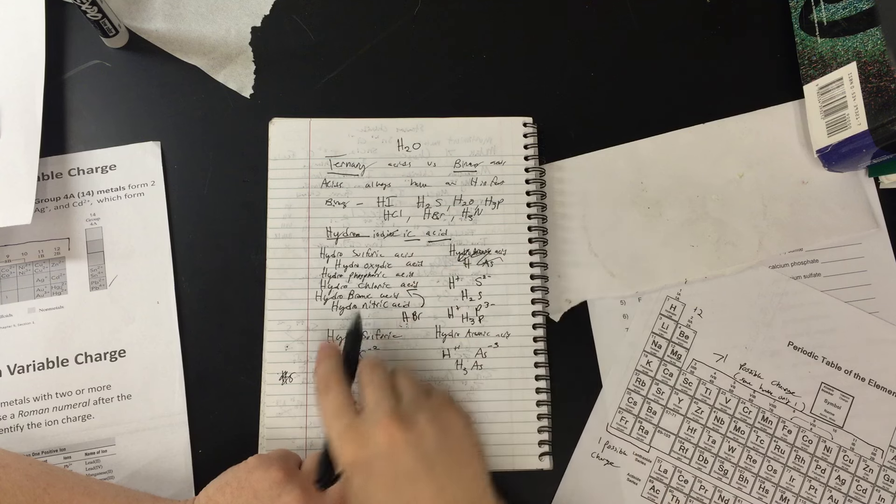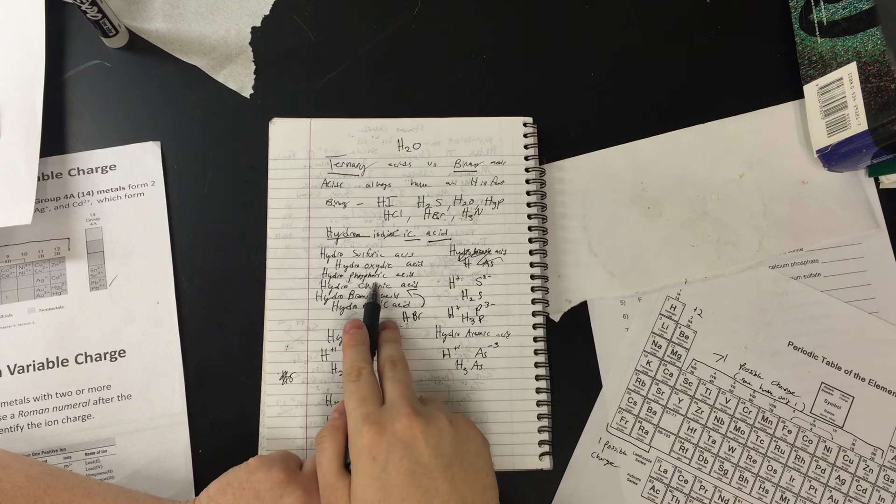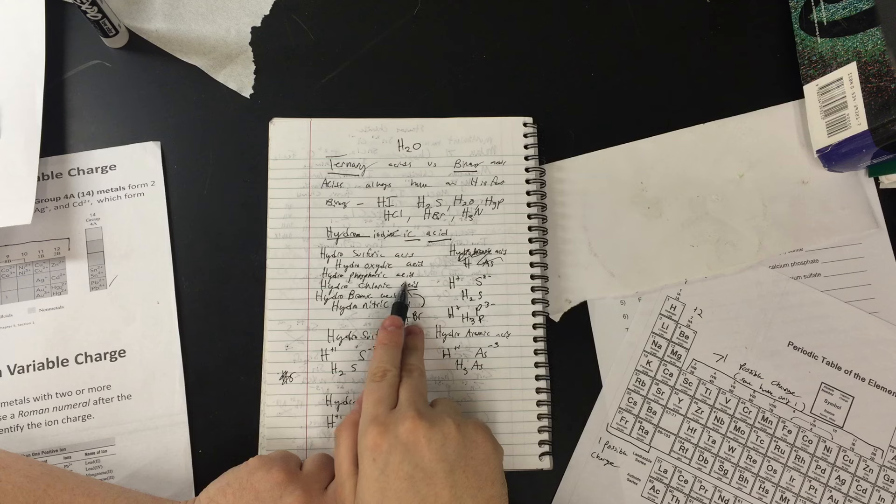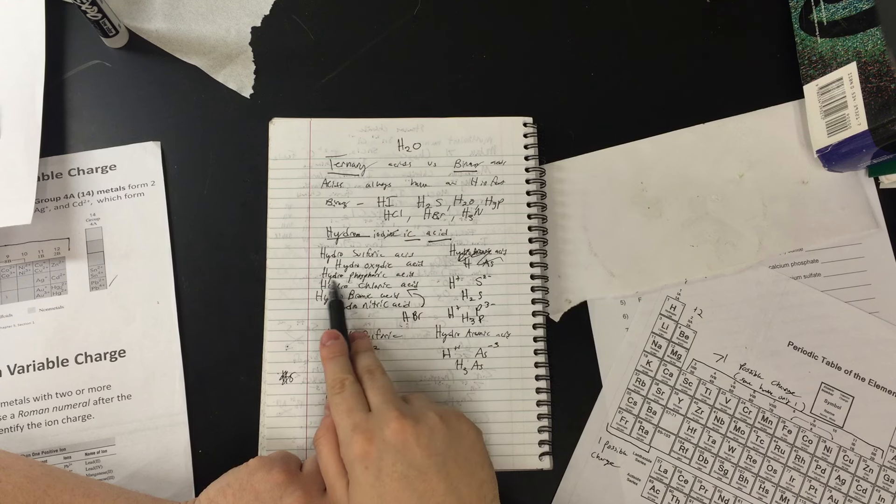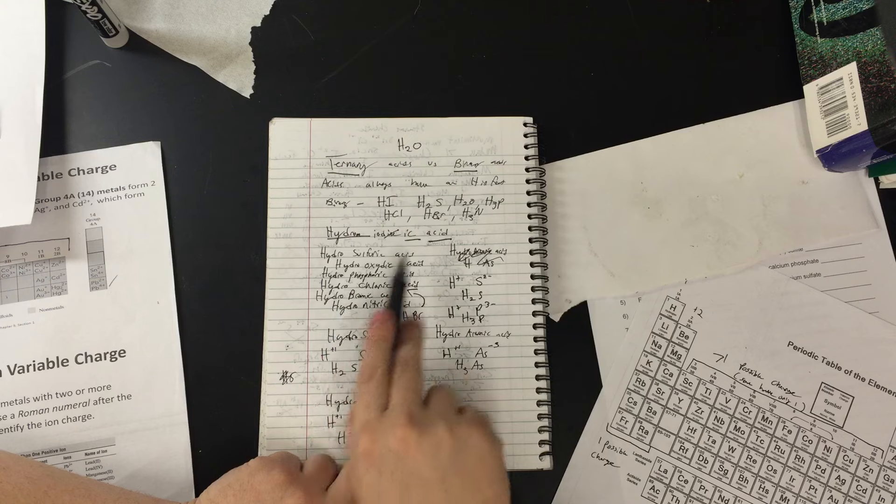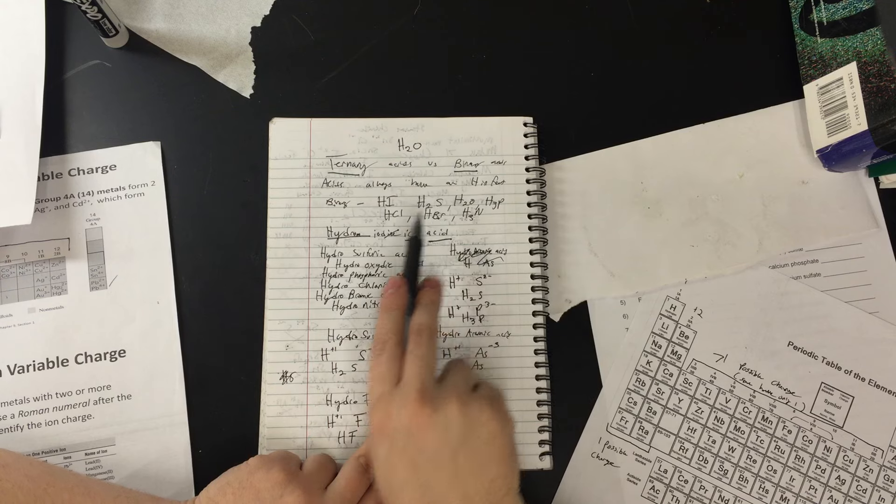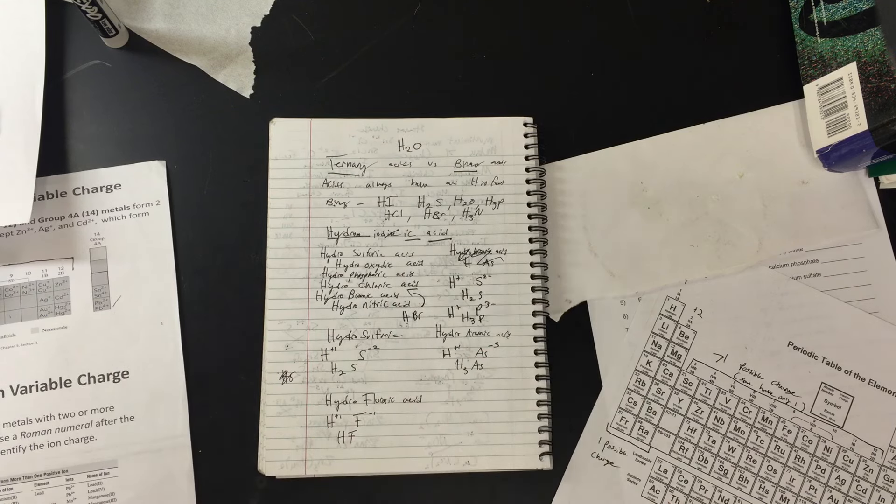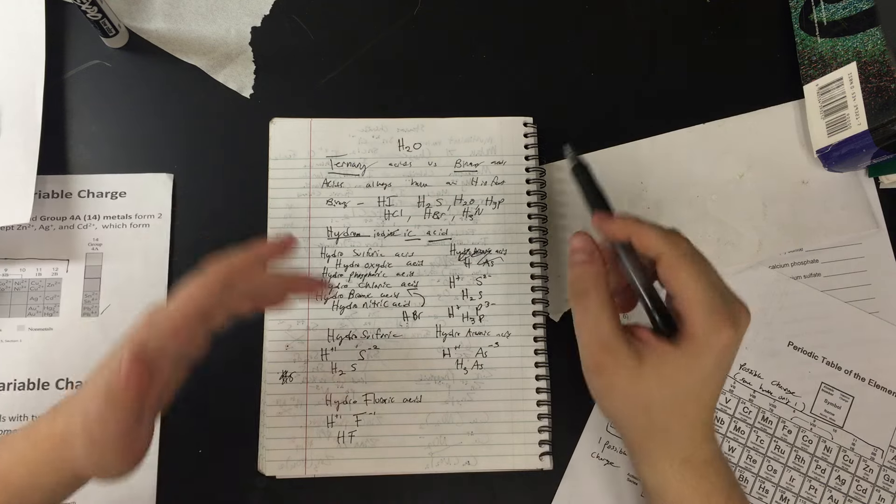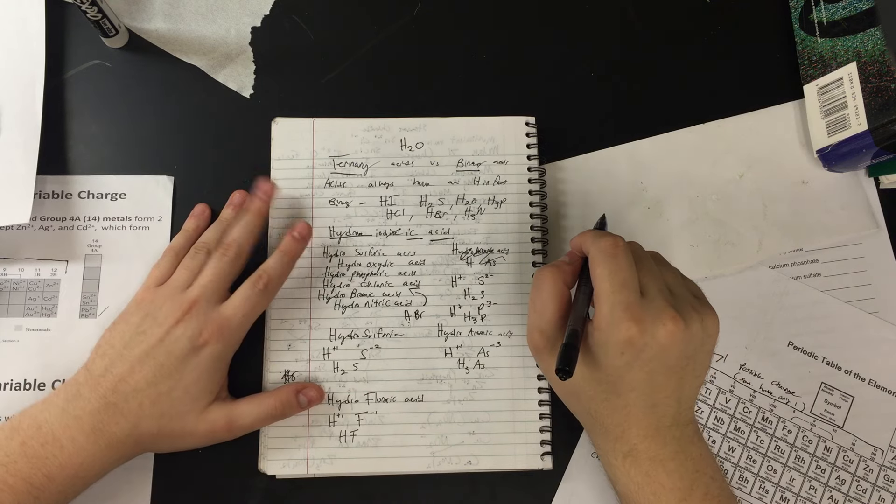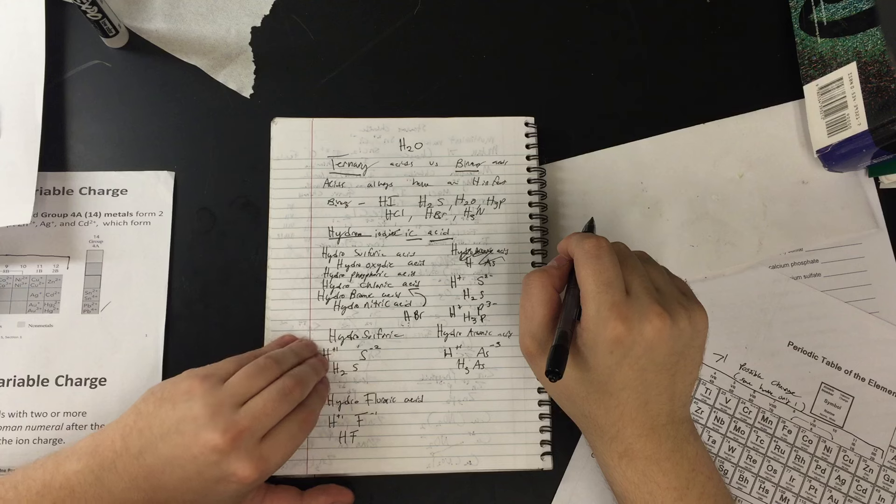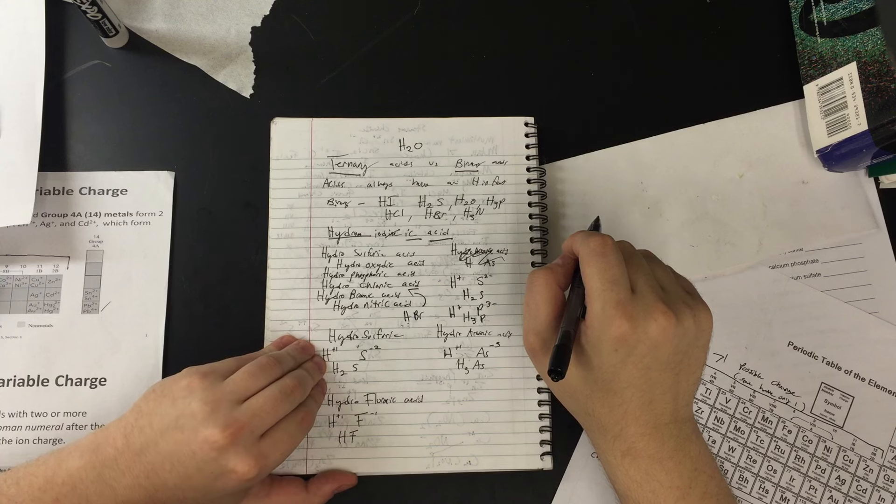And you see the common theme here. We're just taking the element name, chopping it off, putting acid at the end. And of course, the hydro up front. The hydro up front is what's going to tell you that it's binary. So it's only going to be hydrogen and another element. One element. So binary is pretty straightforward. I'm sure you guys can get the hang of that. Ternary can get a little bit tricky.